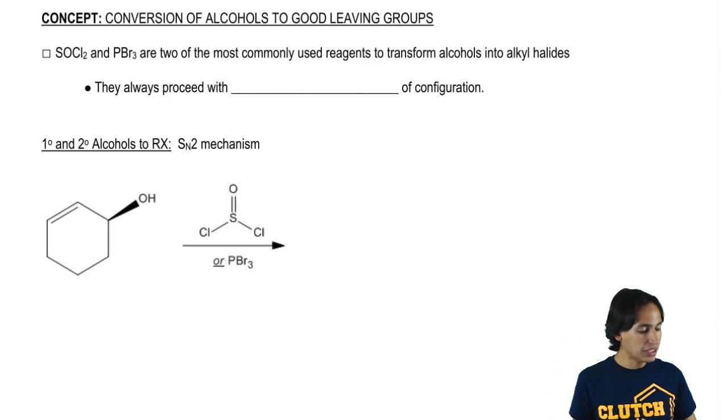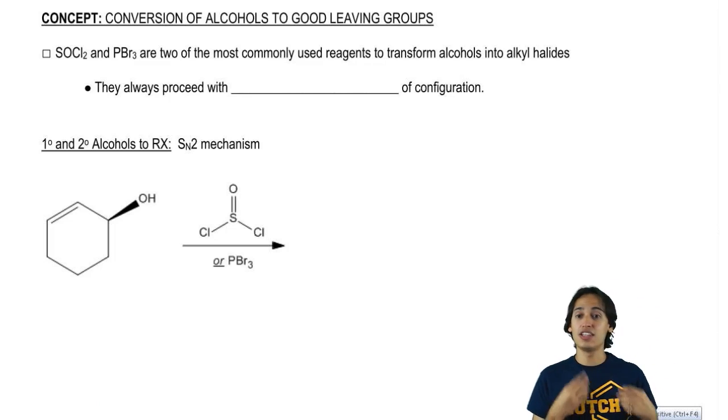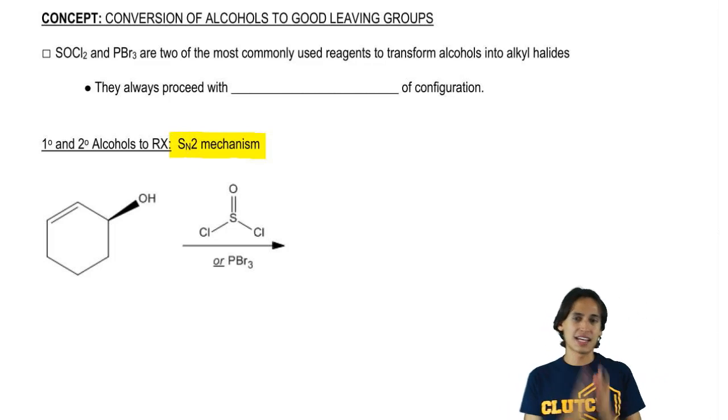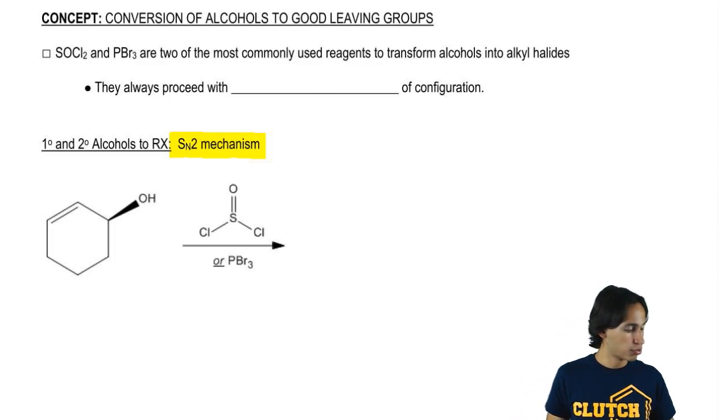Now, the only thing that's special about these is that these are always going to proceed through an SN2 mechanism. So what that means is that since it's SN2 backside attack, these are going to be limited to working on only primary and secondary alcohols.